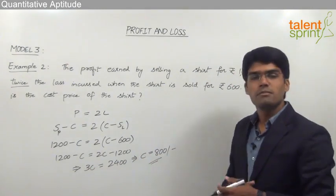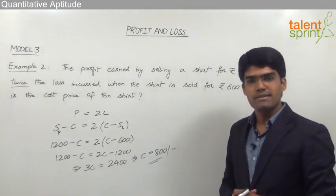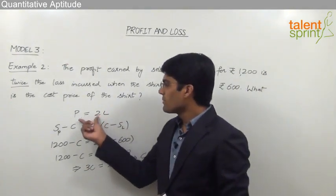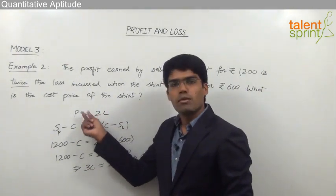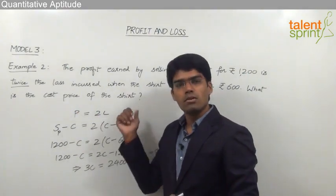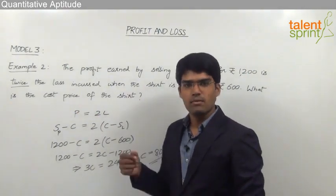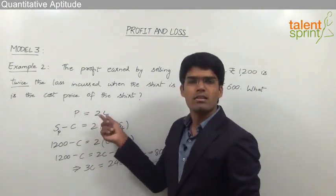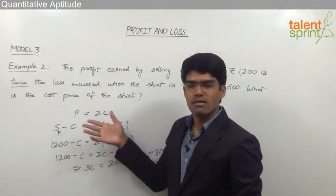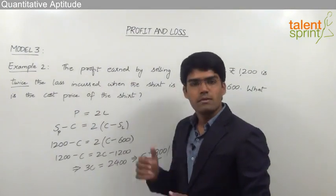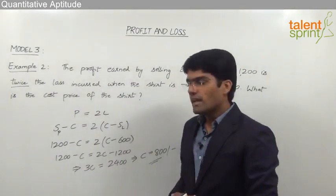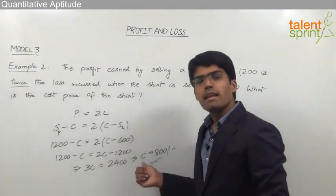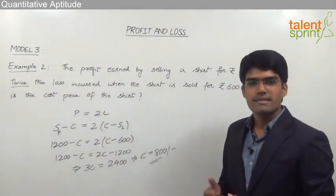What you can understand from these two examples is to always write the proper equation — profit equal to loss as in Example 1, or profit equal to twice the loss as per the given question. Then just substitute the values properly and get the required answer.